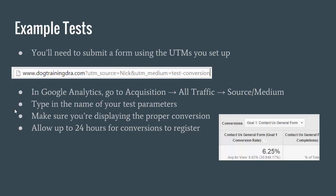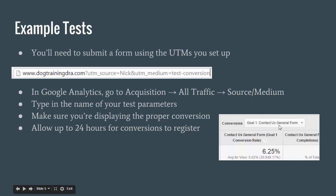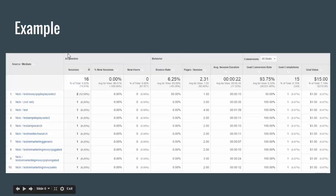Make sure that when you do that, you're displaying the proper conversion. If you're doing a test conversion on a quote form, make sure that under the conversion drop-down box you have the right goal selected. I can't tell you how many times somebody is confused in analytics about why something isn't showing up — it's usually because they're looking at the wrong date range or the goal they have selected is the wrong goal. So make sure you're selected on the right goal and the right date range. The last note says allow up to 24 hours for these conversions to register, because sometimes Google has a bit of a lag time when importing that data into analytics.